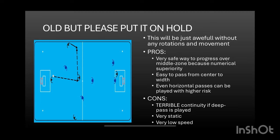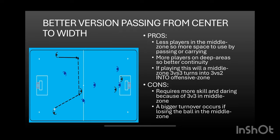What some call 'old but gold,' I call 'old, please put it on hold' — because in my personal opinion this is just wasting space and receiving players on the pitch. You essentially have a one-three-one formation for opening the game, with four players building in the middle zone, creating a situation where you have only one receiving player in the offensive zone who will be outnumbered in many situations. However, it is a very safe way to progress over the middle zone and makes it easy to pass from the center to the width.